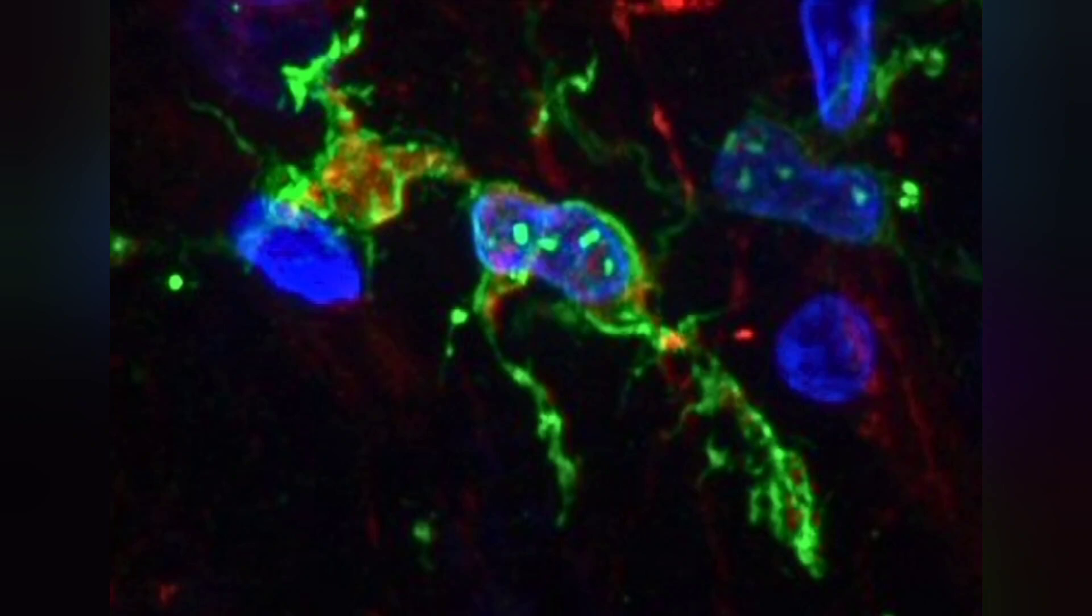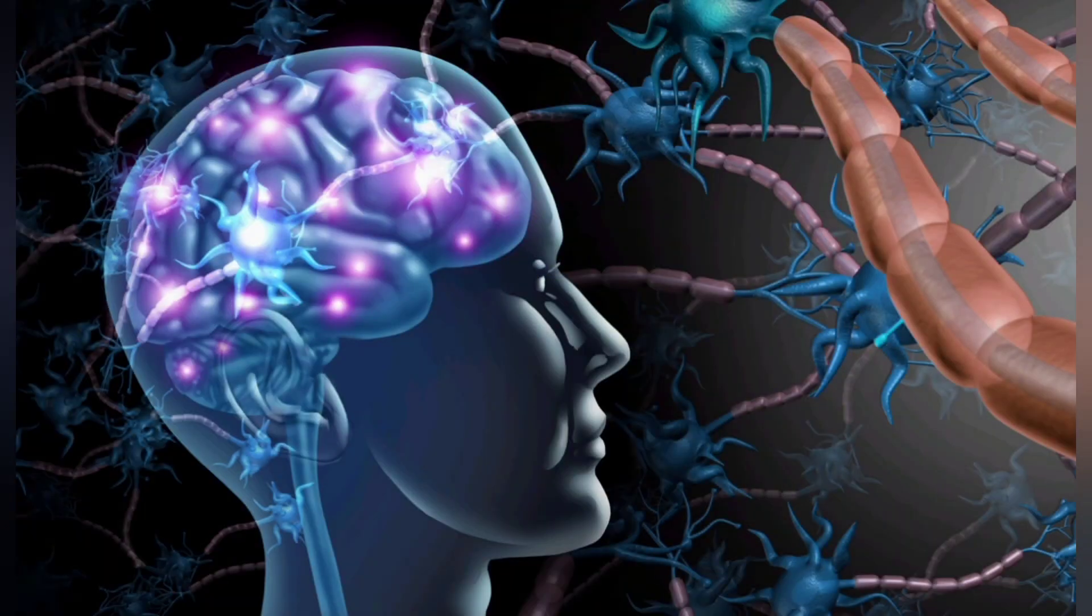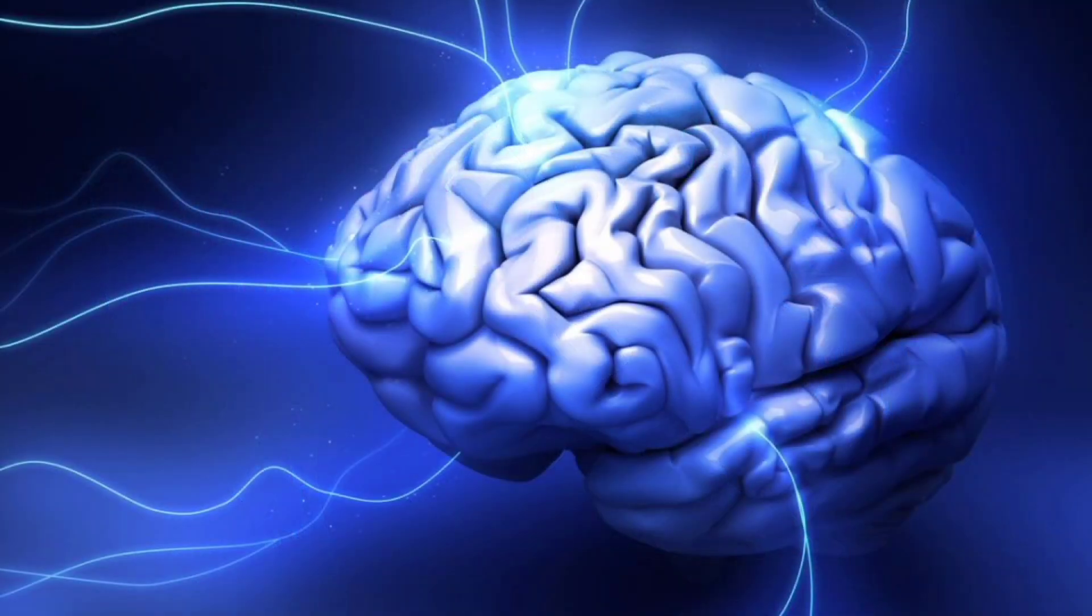The scientists also think microglia can change types over time. So we can't just look at a person's brain and say for sure what type of microglia they have; keeping track of how microglia change over time could help us understand how they contribute to Alzheimer's disease.